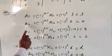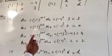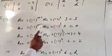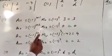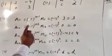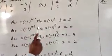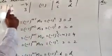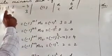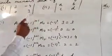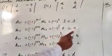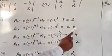Similarly, the cofactor of element A12 is minus 1 to the power 1 plus 2 into the minor M12. This is minus 1 to the power 3, and the minor of element A12 is obtained by eliminating the corresponding row and column, giving 0. So the ultimate value is 0.